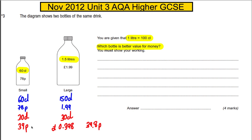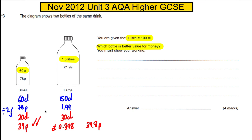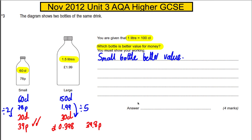Therefore, this one being ever so slightly cheaper is better value for money. In our workings we show a divide-by-2 for the small bottle and a divide-by-5 for the large bottle. We therefore state the small bottle is better value, and we're done. Make sure you show that working.